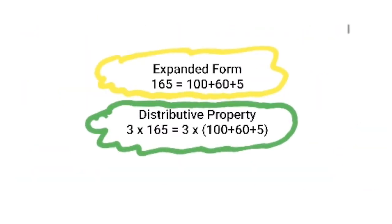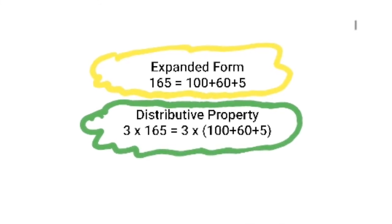You can use the expanded form. 100 plus 60 plus 5 gives you 165.